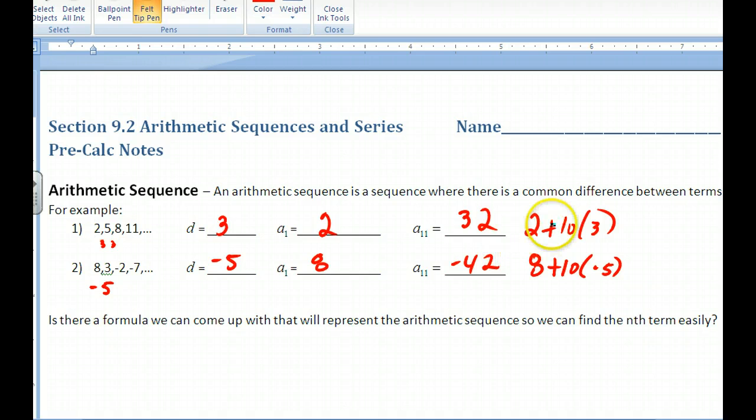Now, the formula that we come up with is based on this stuff that we have right here. We're going to find any term, listed as a sub n. A sub n is going to be my first term, plus I'm only going to account for one less difference than my number of terms, so it would be n minus 1 times my difference. That would be the formula that we're going to be using.